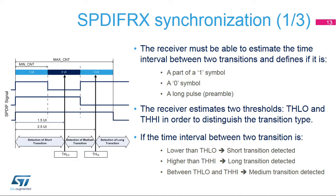When both thresholds have been computed, the SPDIF-RX compares the time interval between consecutive transitions of the incoming stream to those thresholds. If the time interval is lower than TH-low, a short transition is detected — two consecutive short transitions correspond to the symbol 1, but can also be part of the preamble pattern. If between TH-low and TH-high, a medium transition is detected, corresponding to the symbol 0 or part of the preamble. If higher than TH-high, a long transition is detected, which is always part of the preamble pattern.